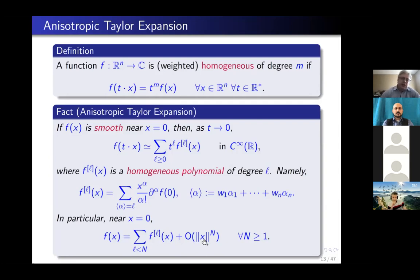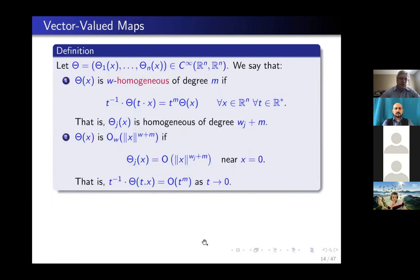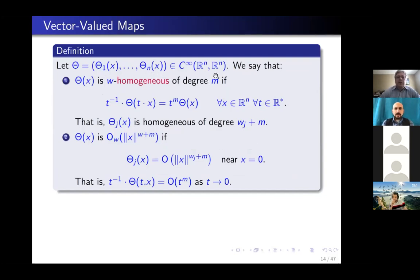We can extend this to vector-valued maps. Consider a vector-valued map with components θ1, ..., θm.